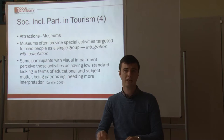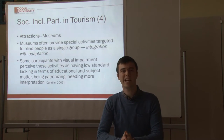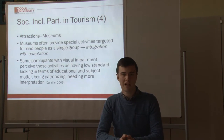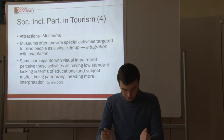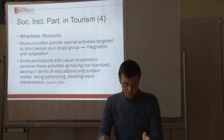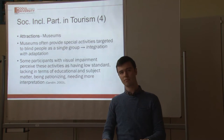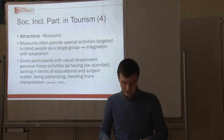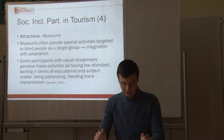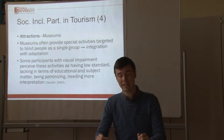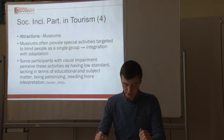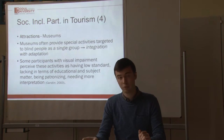Museums and attractions are one example where providing access is not enough. What museums very often do is provide special activities for people with sensorial impairments — particularly for people with visual impairment. However, people with visual impairment very often perceive these activities as being low standard, lacking in educational subject matter, sometimes patronizing, and needing more interpretation. This reflects the inability of integration with adaptation in tourist attractions, particularly museums, to provide truly inclusive participation of people with disabilities.